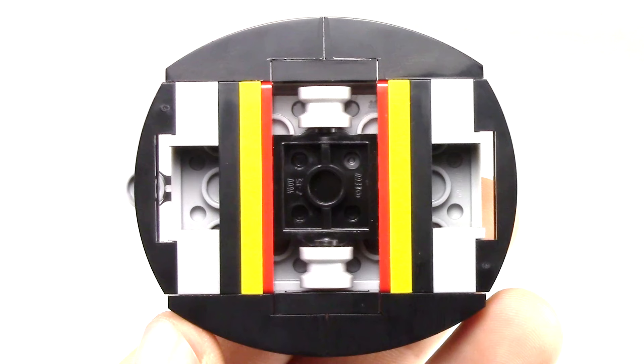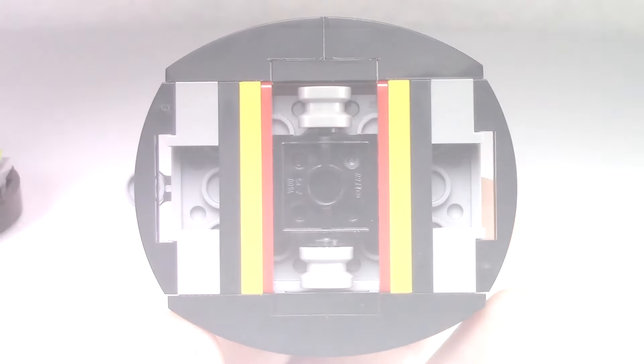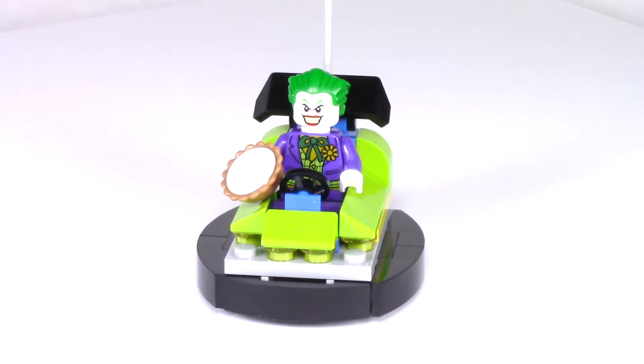The bumpers are attached in a very clever way, to provide that circular coverage. Also at the bottom we can see the two wheels. While this would roll better on four, the two wheels provide a really nice way to roll it and spin it, to make it really authentic. And here's what it looks like with the Joker seated inside.